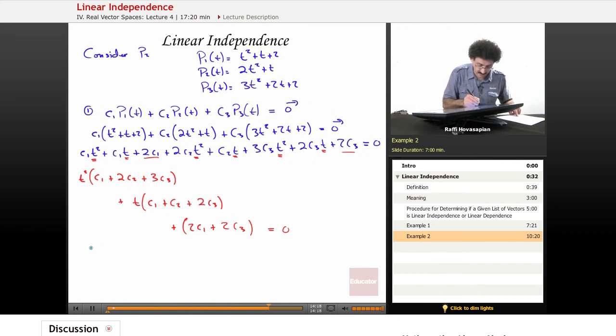So I get C1 plus 2C2 plus 3C3 equals 0. We don't want these lines floating around. We want to be able to see everything here. C1 plus C2 plus 2C3 is equal to 0. Then 2C1 plus 2C3 is equal to 0.